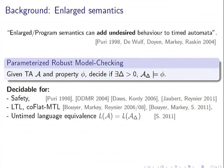The enlarged or program semantics can add undesired, qualitatively different behavior. This was first observed for clock shifts and then for clock imprecisions. Because of this problem, parameterized robust model checking was studied: given a timed automaton and a property φ, decide if there exists a bound δ small enough such that the enlarged automaton satisfies φ. This was studied for safety properties, linear time properties, fragments of MTL, and timed/untimed language equivalence between A and A_δ.